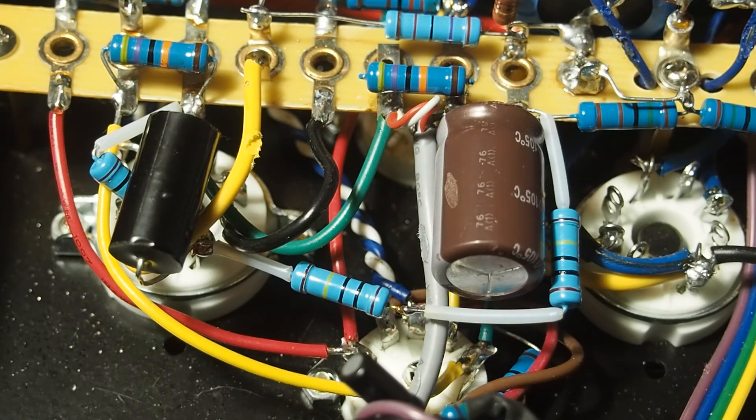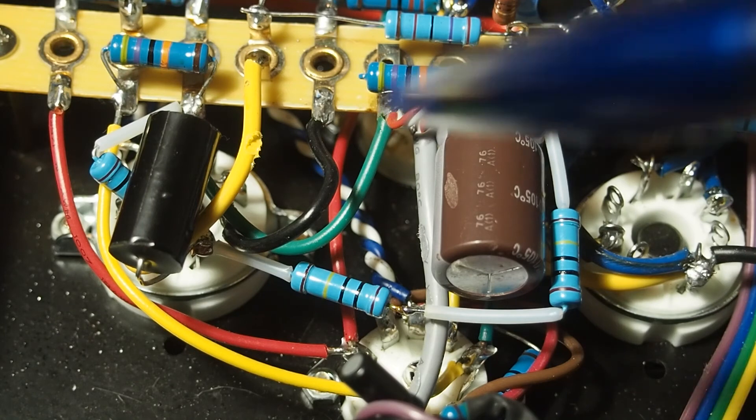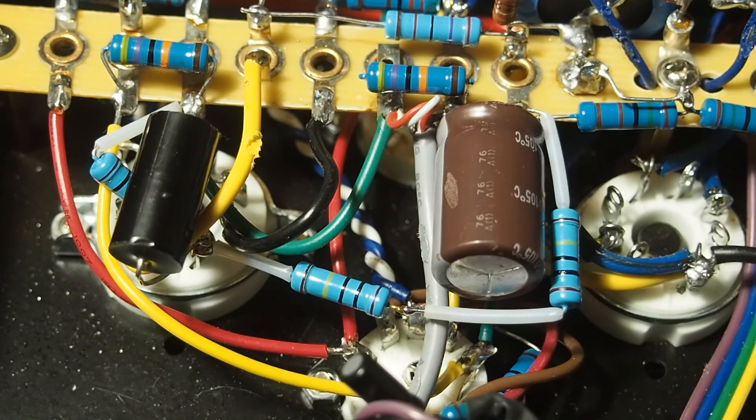But you could see the distortion even at lower volume levels with an uneven sine wave. When you look at the output, it was fatter on the bottom and thinner on the top. And after doing this mod, it made it very even.